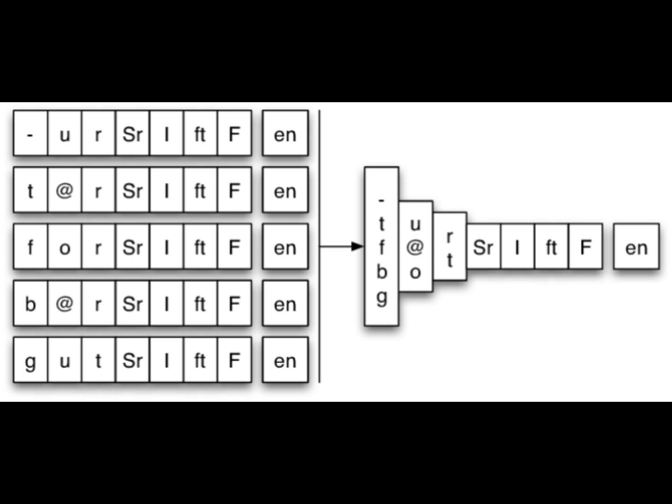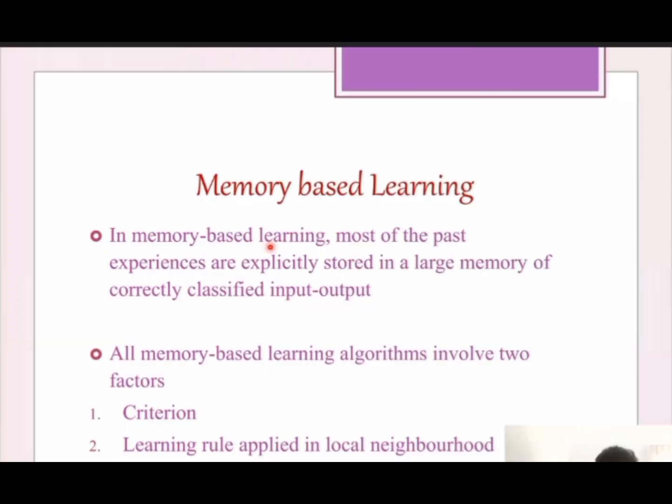Two essential factors of memory-based learning are: number one is the criteria used for determination of the local neighborhood of the input value, and second is the type of learning rule applied to learning data that are used as examples in the local neighborhood.